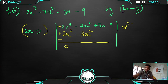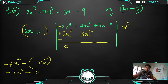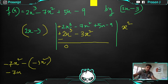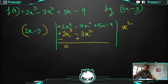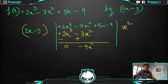Now −7x² was there; subtracting −3x² from it: minus of minus three x² becomes plus three x², so −7x² + 3x² gives −4x². Then bring down the remaining terms. So after the first step you have −4x², and the rest come down as they are.